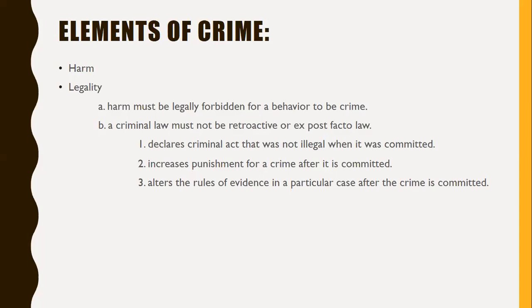Next is legality, which has two aspects. First, the harm must be legally forbidden for a behavior to be a crime. A violation of union rules or rules of any organization other than a political jurisdiction may be wrong, but it is not a crime unless also prohibited by criminal law. Second, criminal law must not be retroactive — that is, no ex post facto law.